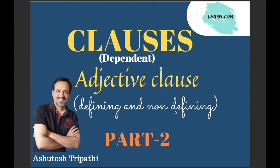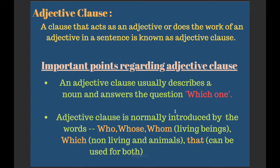Let's begin by defining what an adjective clause is. A clause that acts as an adjective, or does the work of an adjective in a sentence, is known as an adjective clause. As you may have learned, an adjective is a describing word — it describes a noun or a pronoun. Similarly, an adjective clause also describes a noun or a pronoun. That is why both an adjective and an adjective clause perform the same function of describing the noun.